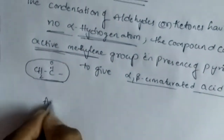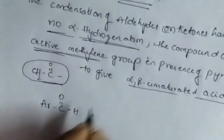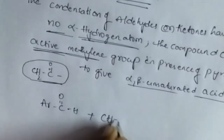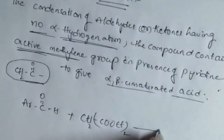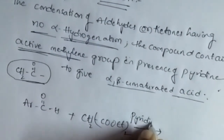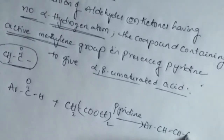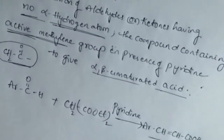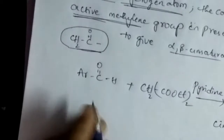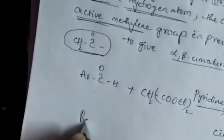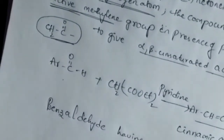Now see the reaction. We take benzaldehyde, that is ArCHO, plus the active methylene group CH₂COOC₂H₅, in the presence of pyridine, we get cinnamic acid. Cinnamic acid means Ar-CH=CH-COOH, that is the alpha-beta-unsaturated carboxylic acid. ArCHO means benzaldehyde, which has no alpha hydrogen atom.